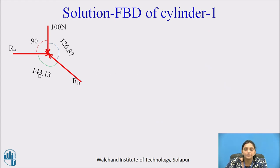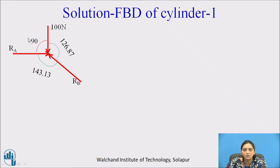Now consider cylinder 1 only. It has three forces: self-weight of 100 Newton, support reaction RA, and mutual reaction RB. Since there are three forces, we can apply Lami's theorem. The angle between the 100 Newton force (vertical) and RA (horizontal) is 90°. Using theta, 90° + 36.87° = 126.87°. Subtracting these two angles from 360° gives 143.13°.